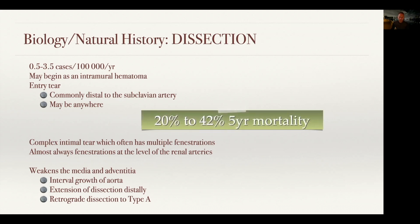And because of all of this, these patients carry a very, very high mortality rate. 20 to 42% of patients who present with acute type B dissections have a five-year mortality anywhere from 20 to 42%. So it's a very high complication rate disease.